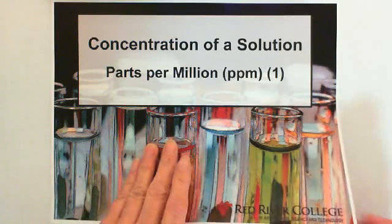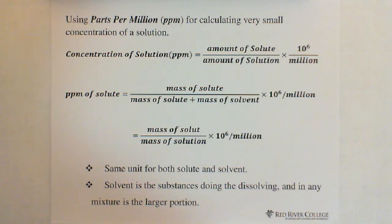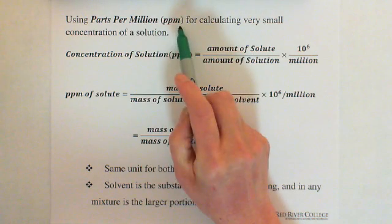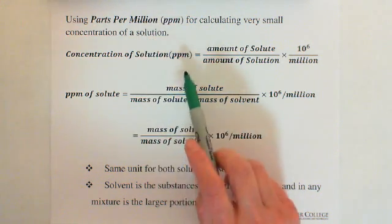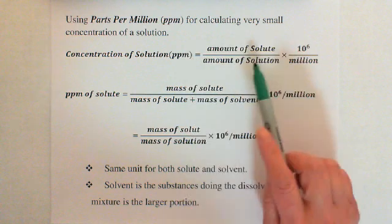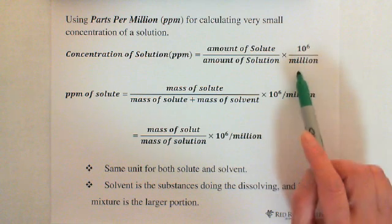Let's look at the definition. Using parts per million, PPM, for calculating very small concentration of a solution. PPM means: the first P means parts, the second P is per, and the M is million. The definition is: concentration of a PPM solution equals amount of solute over amount of solution, times 10 to the sixth exponent, per million.